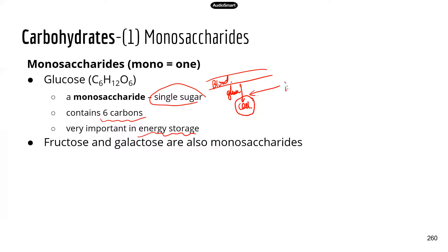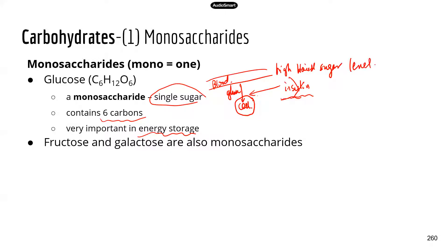That's why insulin is so important. If you don't have enough insulin, or if your cells' sensitivity to insulin is going down, then the cells are going to have trouble taking in glucose from the blood. Those patients tend to have a high blood sugar level — basically, those patients are diabetic.